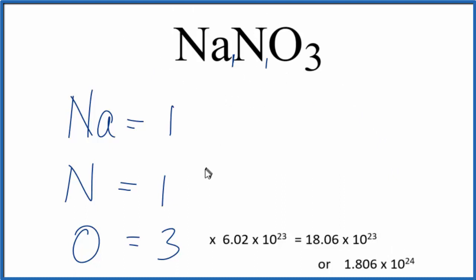If you wanted to know the number of sodium atoms, you would just take 1 times Avogadro's number, and you'd have 6.02 times 10 to the 23rd atoms of sodium in 1 mole of sodium nitrate.